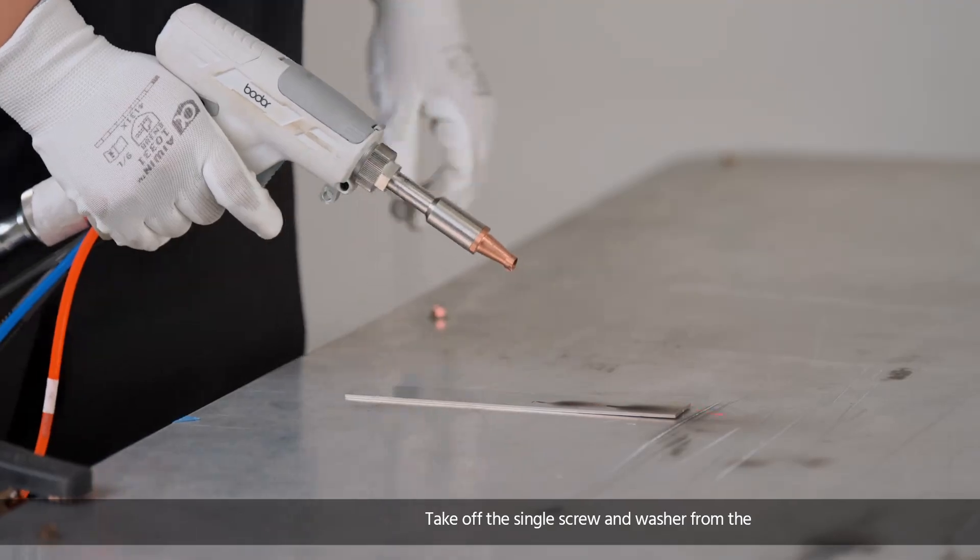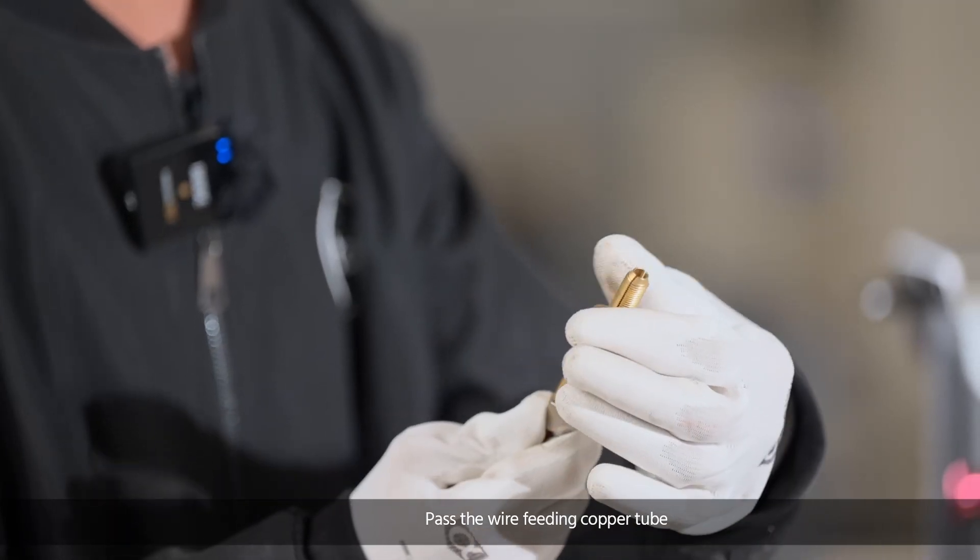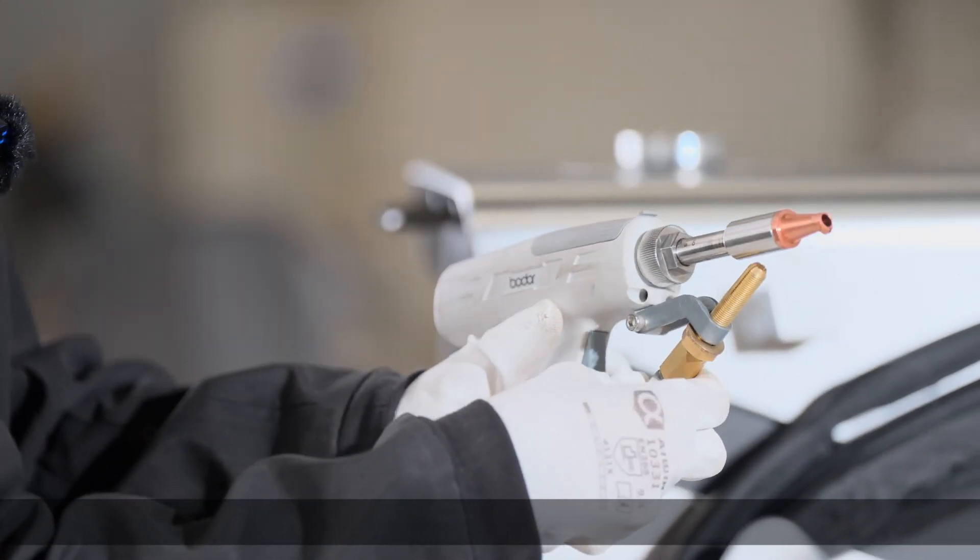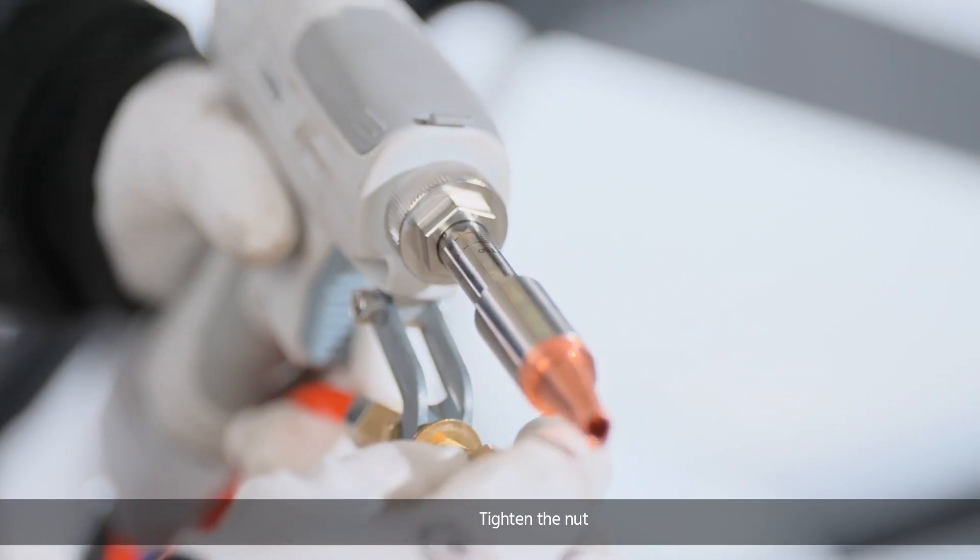Take off the single screw and washer from the wire feeding tube's welding end. Pass the wire feeding copper tube through the locking bracket at the welding head, put the washer, and tighten the nut.